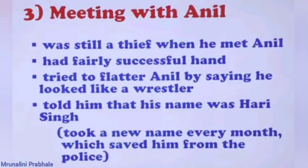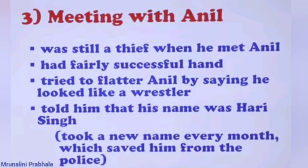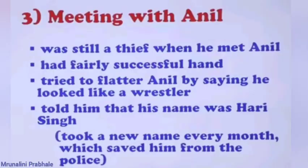When the thief met Anil, he had a fairly successful hand and tried to flatter Anil by saying he looked like a wrestler. Anil replied that the thief also looked like a wrestler. The thief then told Anil that his name was Hari Singh — this is the name of the thief used throughout the whole story. So the two major characters are Anil and Hari Singh, where Hari Singh is both the thief and the narrator.